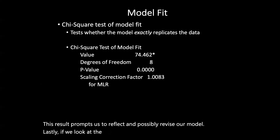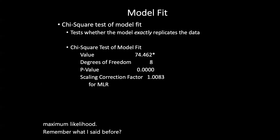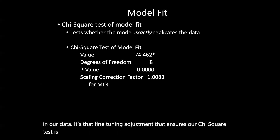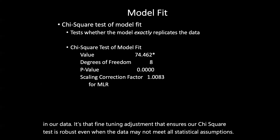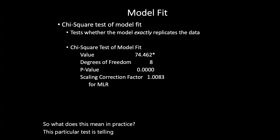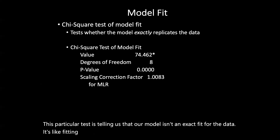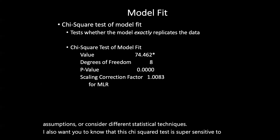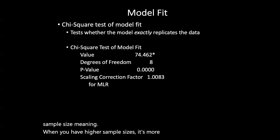Looking at the scaling correction factor of 1.0083 in robust maximum likelihood, this accounts for potential violations of normality in our data — it's the fine-tuning adjustment that ensures our chi-square test is robust even when data may not meet all statistical assumptions. This particular test is telling us that our model isn't an exact fit for the data. We might need to re-examine our model structure, rethink some assumptions, or consider different statistical techniques. Note that the chi-square test is very sensitive to sample size — with higher sample sizes, it's more likely to be significantly different, which is why we have other model fit statistics.